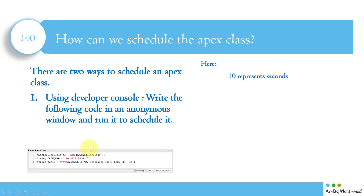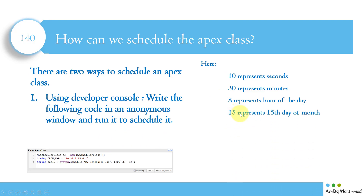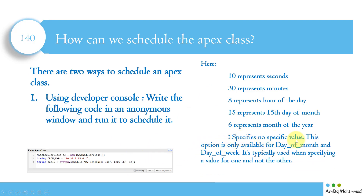The numbers in the cron expression represent the following: 10 represents seconds (10 seconds), 38 represents minutes (38 minutes), 8 represents the hour of the day (8th hour), 15 represents the 15th day of the month, and 6 represents the month of the year — which is June. So read together: June 15th at 8 hours, 38 minutes, and 10 seconds. That is when this job will run.